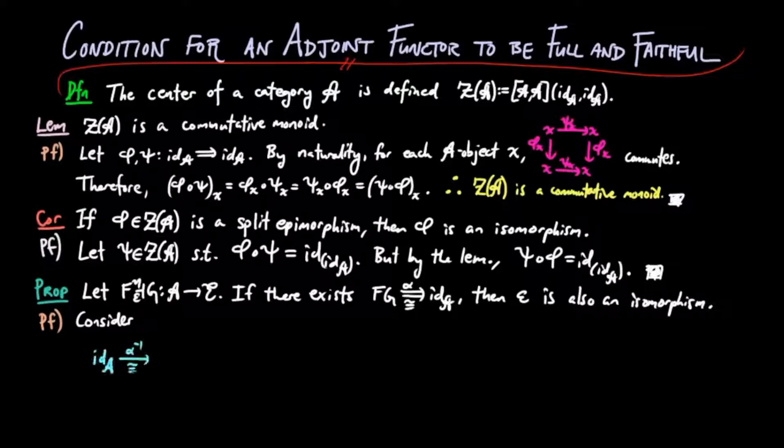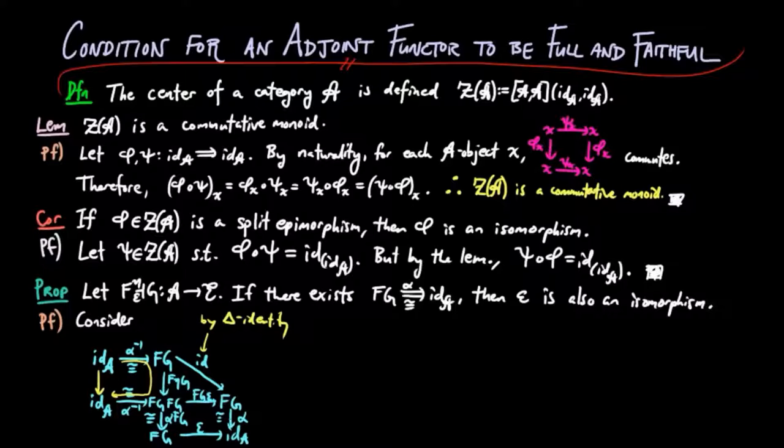To prove this, consider the following diagram where the diagonal is the identity on FG by the triangle identity for the adjoint situation. We use the isomorphism alpha to complete the diagram. Therefore, we see that the co-unit epsilon is a split epimorphism.